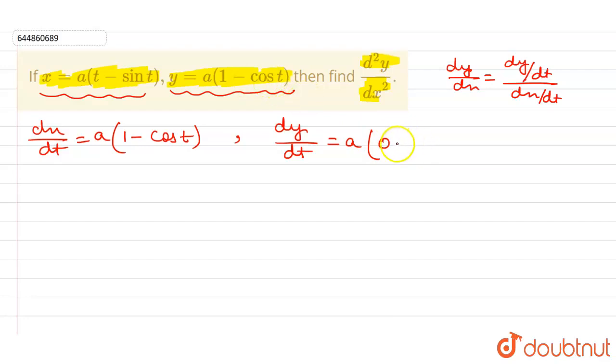So minus minus is plus, so I write here plus sin t. So from here I can write dx/dt equals a times 1 minus cos t.